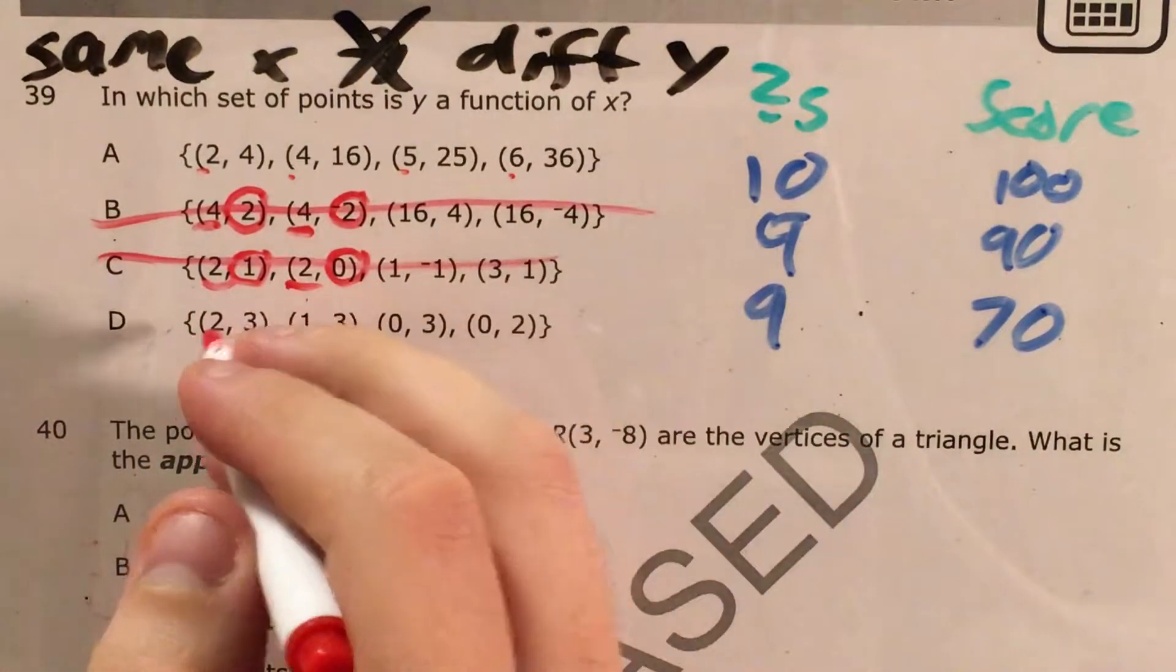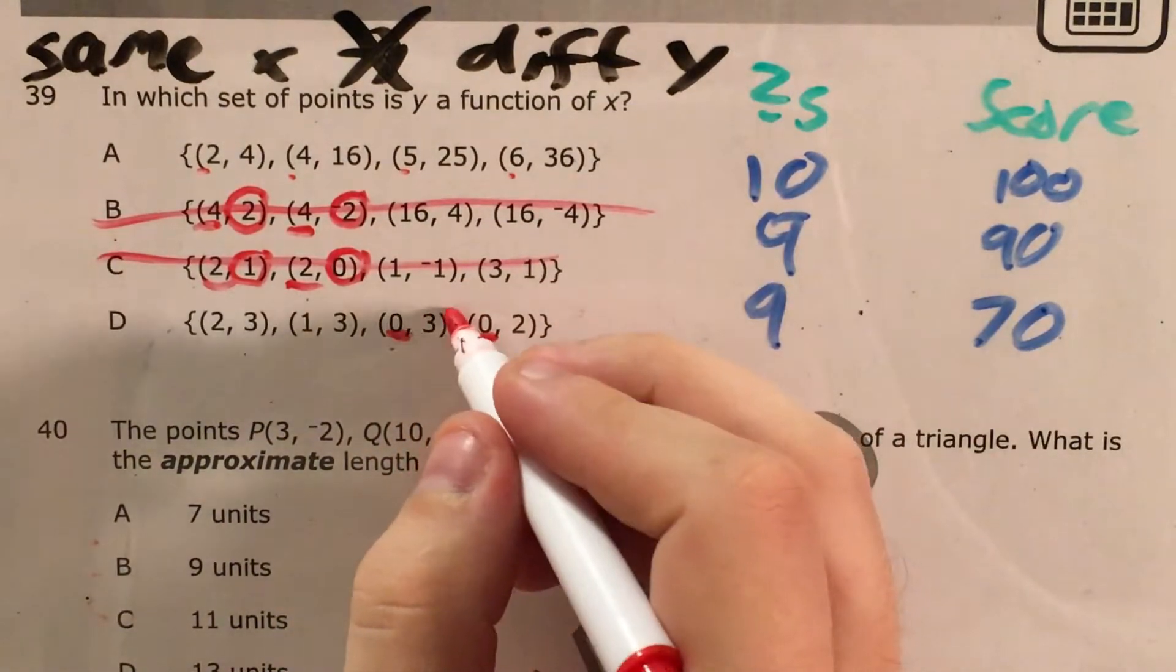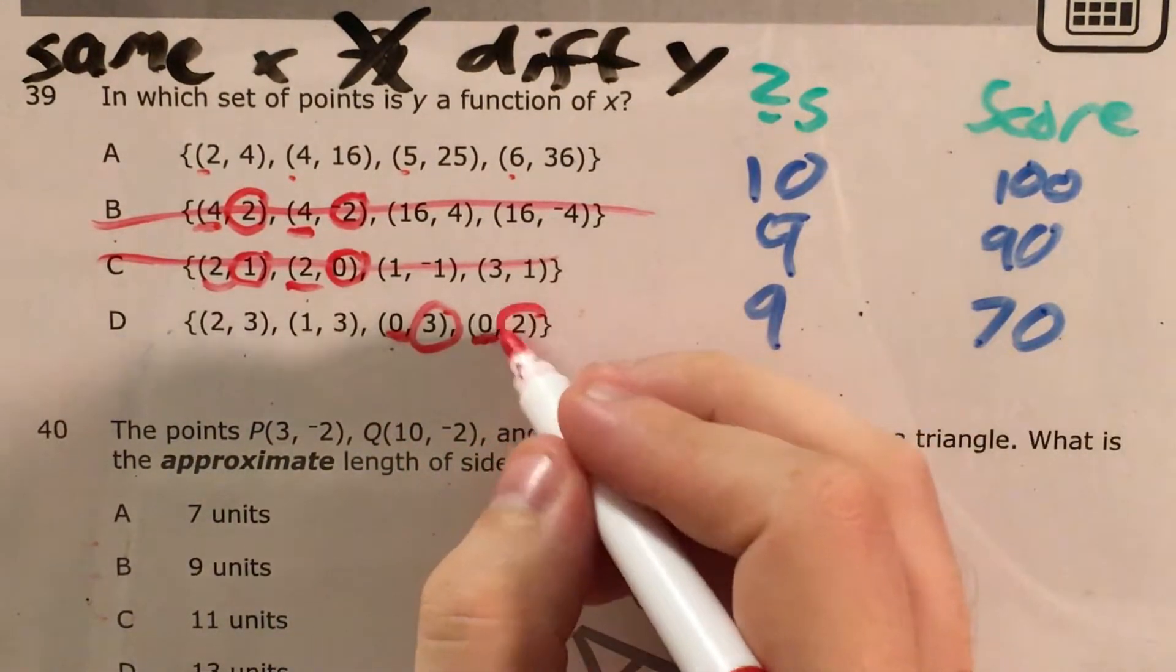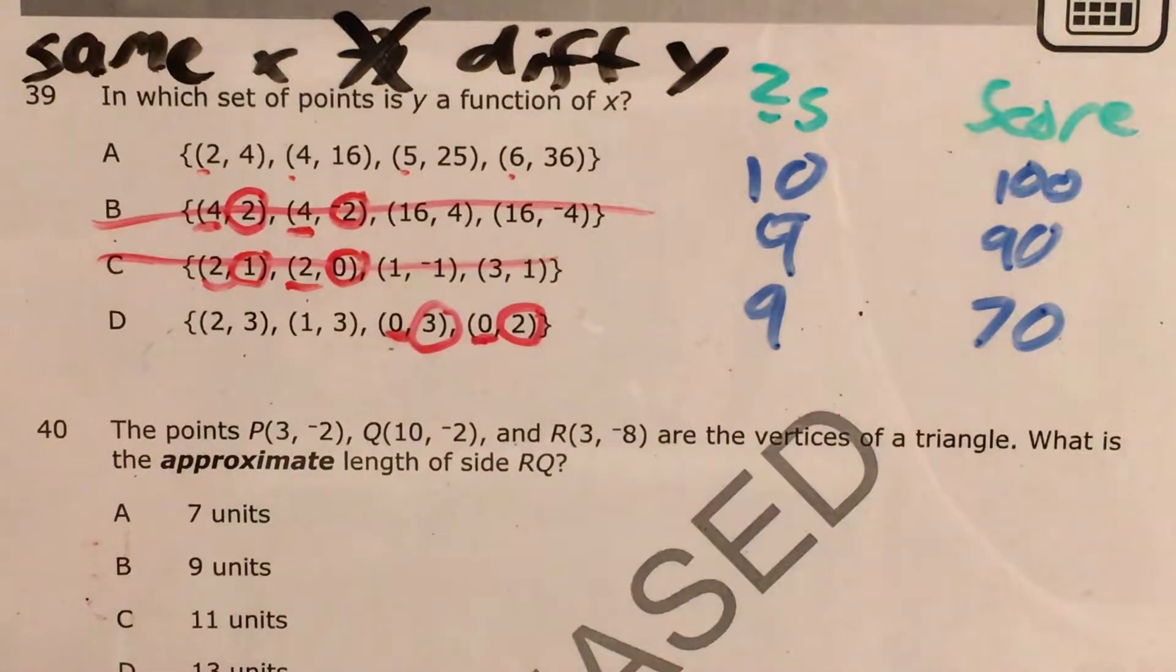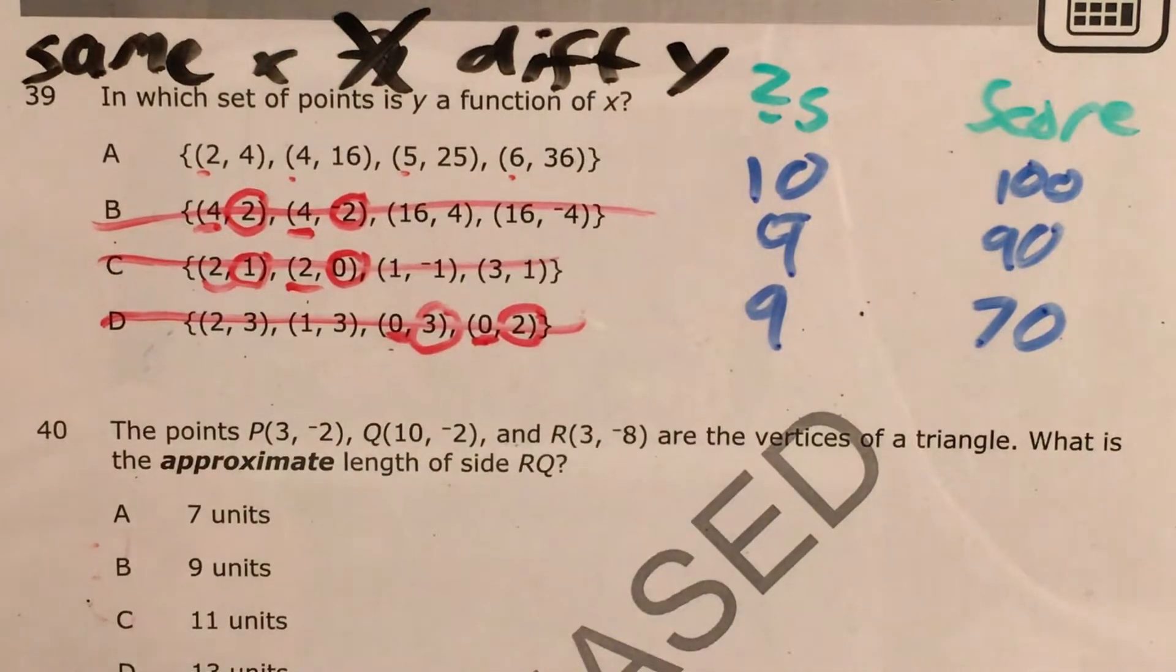Now for choice D, x of 2, x of 1. We have matching x's, 0 and 0. This person got a 3, and this person got a 2. Both for getting zero questions right and we don't want that. So it can't be D either.